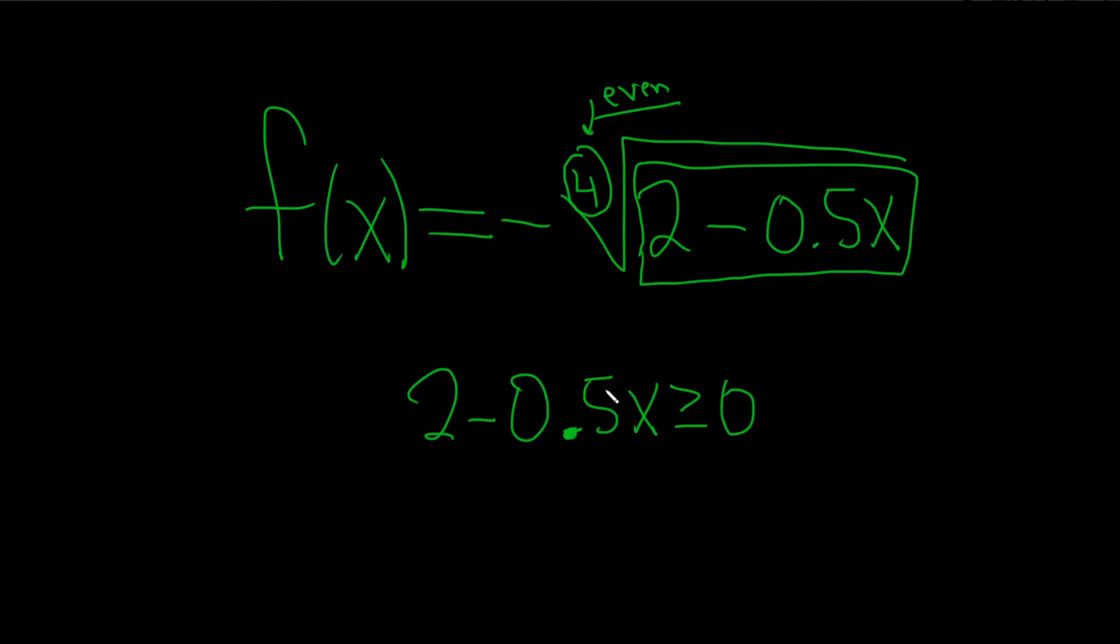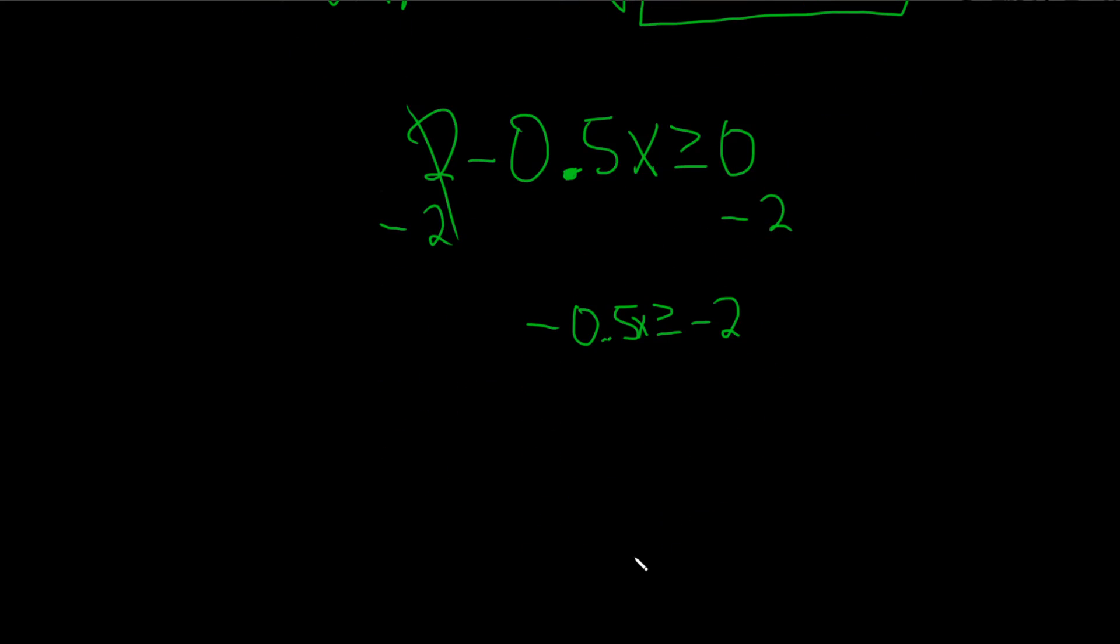Okay, let's solve for x. I'll subtract 2, so we get -0.5x greater than or equal to -2. Then we divide by -0.5, so we switch the inequality.